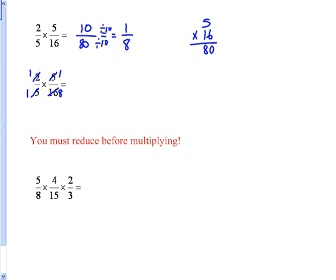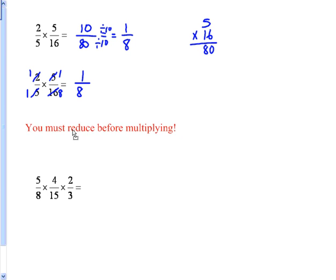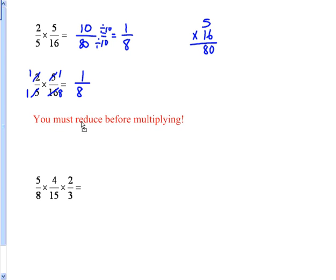And both of those fives become ones. Now, if I look at two and sixteen, two also goes into sixteen. So I can divide the top by two and the bottom by two and I get an eight in the bottom. Now when we multiply, I get one times one is one and one times eight is eight. I don't have to worry about, number one, really big numbers. And number two, reducing in the end. So, key idea, we must reduce before we multiply.